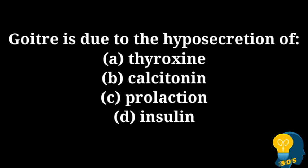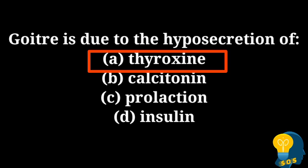The next question is: goiter is due to the hyposecretion of? The options are option A: thyroxin, option B: calcitonin, option C: prolactin, and option D: insulin. The correct answer is thyroxin. When the thyroid gland produces an excess amount of thyroxin, the person will suffer from goiter and the glands near the neck region start increasing in size. Calcitonin regulates calcium and phosphate in the blood, prolactin is responsible for milk production, and insulin regulates blood sugar level, so the correct answer is thyroxin.